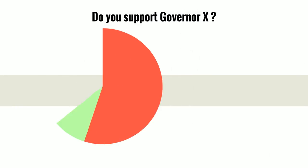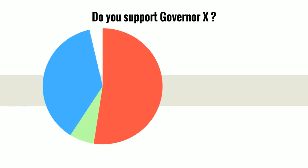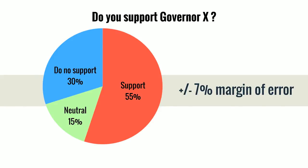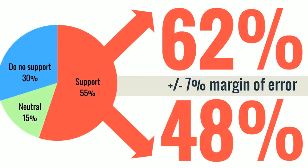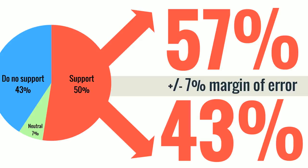Two weeks ago, the opinion survey showed that 55% of the respondents supported the politician. Two weeks later, it went down to 50%. With the margin of error at plus or minus seven percentage points, what the first poll indicates is that when generalised to the entire population, his approval rate could be as low as 48% and as high as 62%. The second poll tells us that the support among the respondents went down to 50%, meaning the proportion of people who support the politician in the city can be anywhere from 43% to 57%.